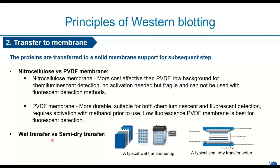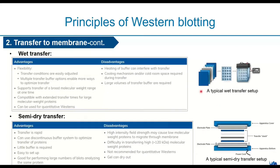There are two different transfer setups: wet transfer and semi-dry transfer. In wet transfer, you create a sandwich of membrane, gel, and filter paper soaked with transfer buffer, insert it into a tank full of transfer buffer, and apply electrical current over time. In semi-dry transfer, the sandwich remains pre-wet and moist throughout the transfer, but it is not soaked in a tank — it lies on a plate or platform where you apply the current.